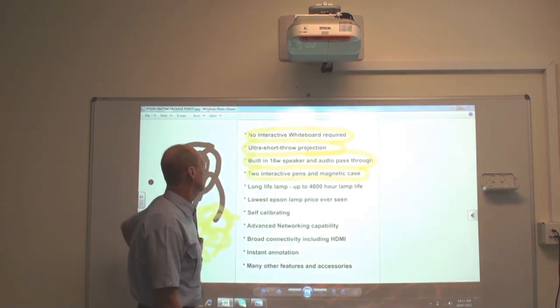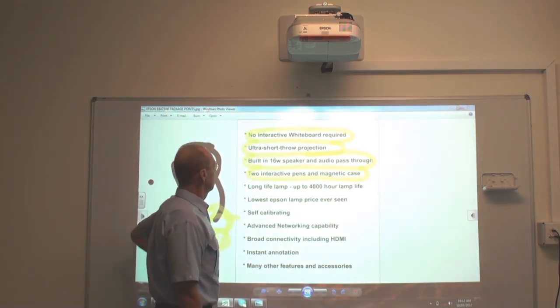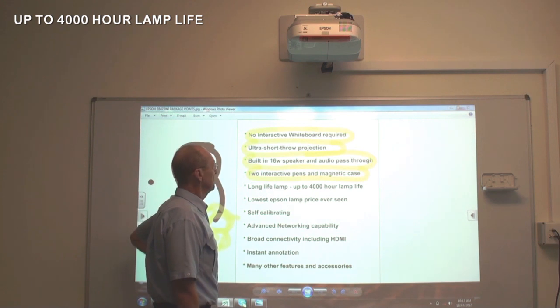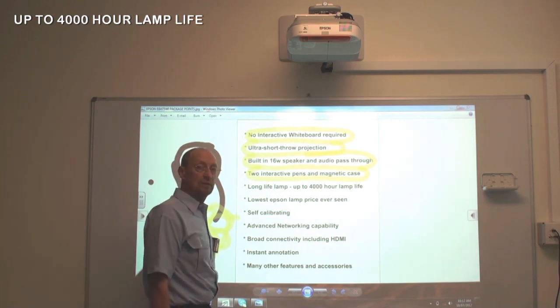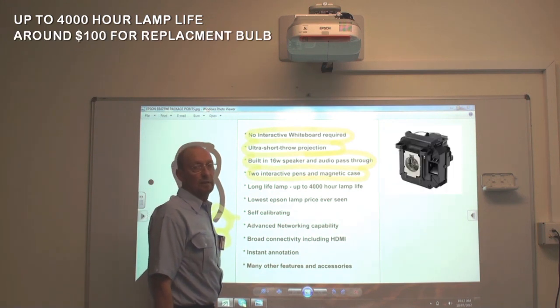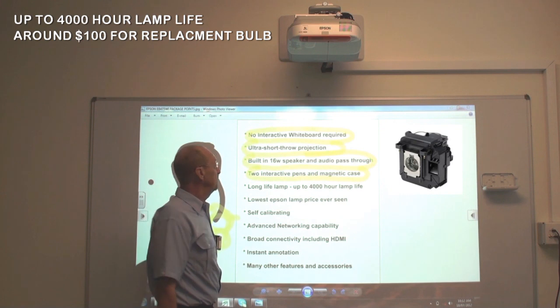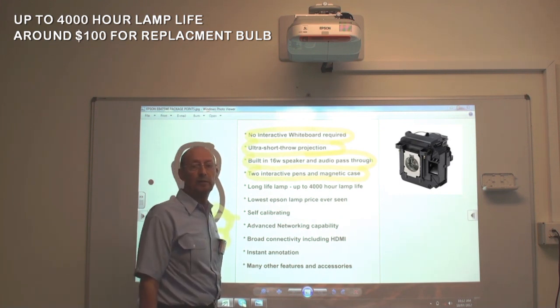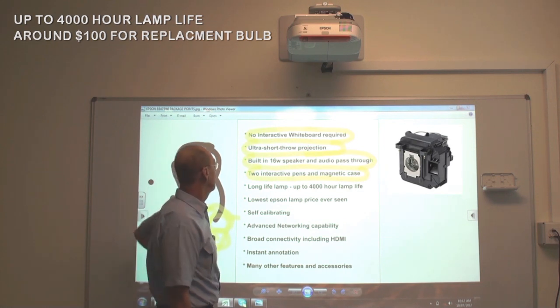Now, this projector comes with a lamp which will give you a long lifespan of up to 4,000 amp hours lamp life. And if the need arises to replace the lamp, the beauty of this system is that it'll only cost you around $100 to replace the bulb instead of the normal $300 to $400, which is a huge cost saving and extends the life of the projector.